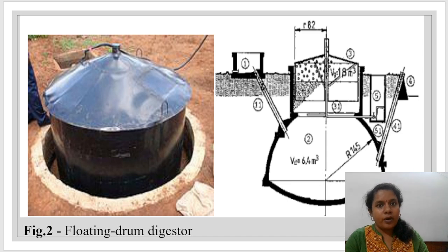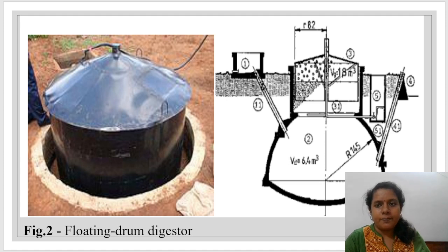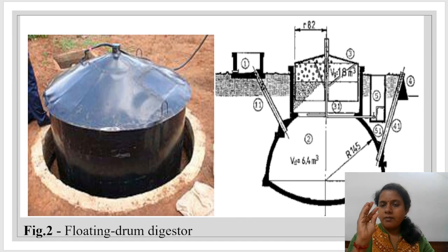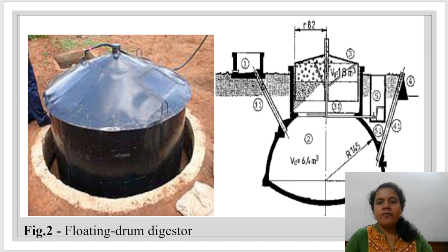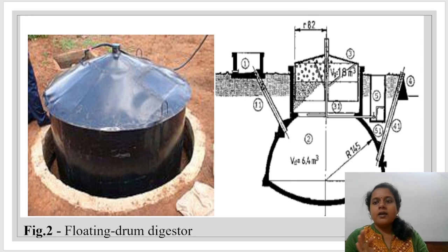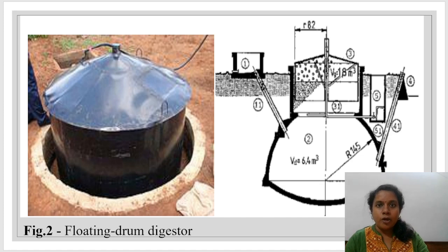Because of the gas pressure, the drum starts floating. When we use the gas for cooking purposes, that drum will fall down. When the slurry increases in the second tank, we collect that slurry through the outlet pipe and use it as fertilizer, or we can discharge it through the sewage.